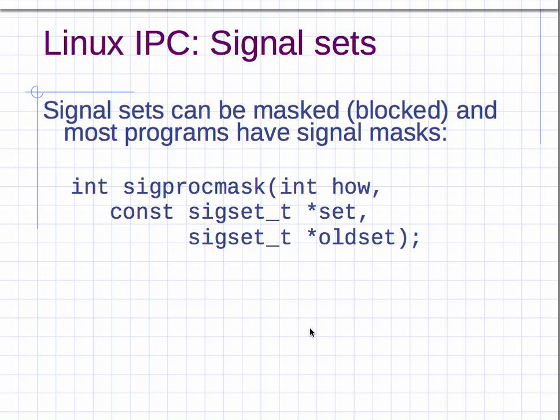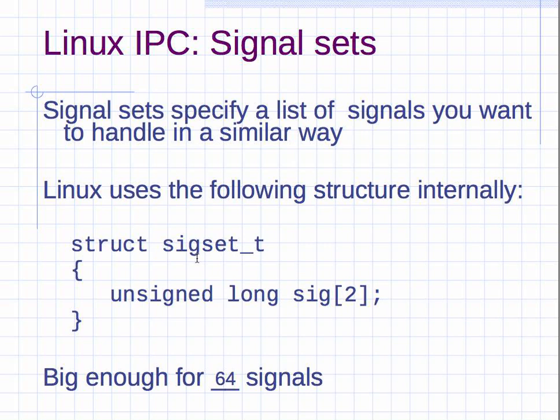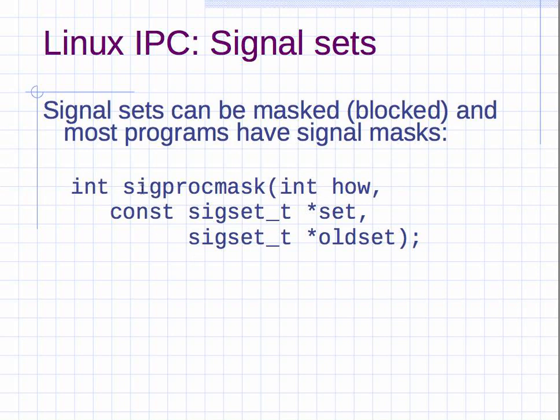You can mask signal sets using pointers to one of these structs. For example, let's say you want to ignore a certain signal. You set a particular bit in an instance of this struct, and then you pass a pointer to that struct object using sigprocmask, and thereby set a particular bit in a signal set. You can mask that signal—that is, you can block that signal from affecting anything in your code.